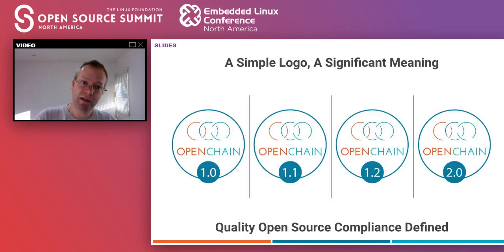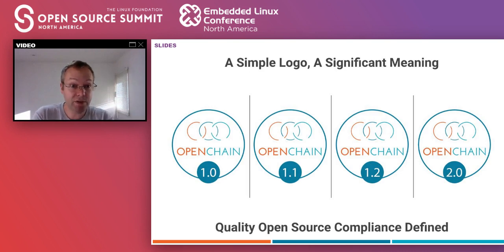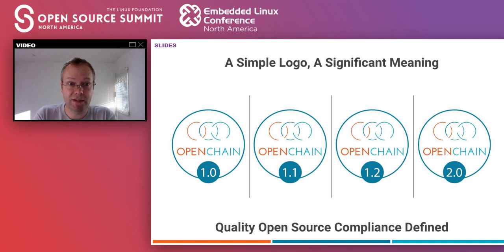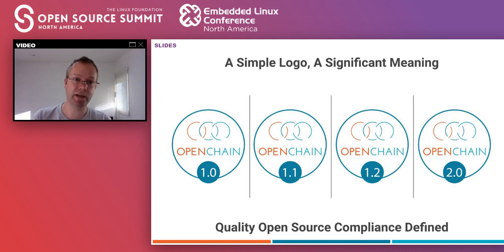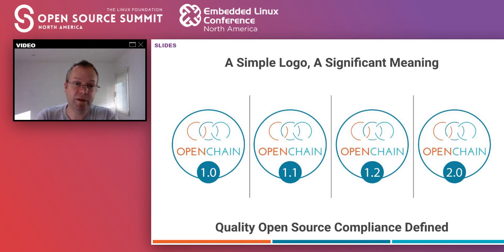Nice, simple concept. If companies are OpenChain conformant to a version of the standard, they can quickly display that version, and their suppliers or customers can understand exactly how that company is contextualizing open source compliance. This streamlines a lot. You can ask your supplier: you're OpenChain conformant — that means you have internal training on open source. Show me the training slides. Or: you have a company-wide open source policy — let me see the policy. This allows companies to verify each other and have productive conversations leading to better compliance solutions.